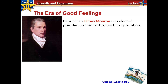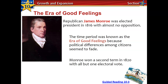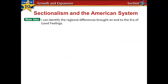President James Monroe became elected president in 1816 with almost no opposition. The time period became known as the Era of Good Feelings because political differences among citizens seemed to fade — which is unusual thinking for those of us living in 2020, where we do see strong political differences. Monroe also quite easily won a second term in 1820, winning all but one electoral vote. He's going to play a really important role in defining the U.S. on a larger scale, particularly with his doctrine.